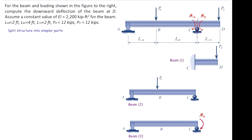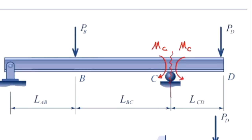We should note that there is a hidden moment — an internal moment caused by the force acting on the right part of that structure, on the cantilever beam. Remember not to forget this internal moment in your calculation.